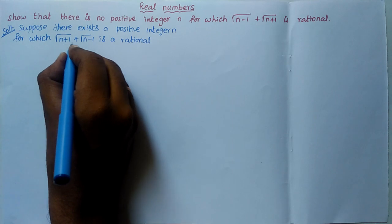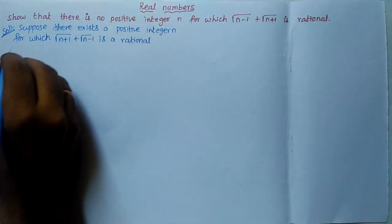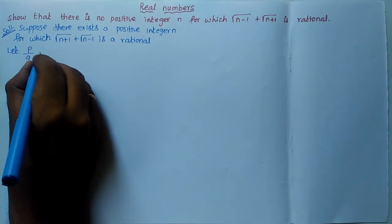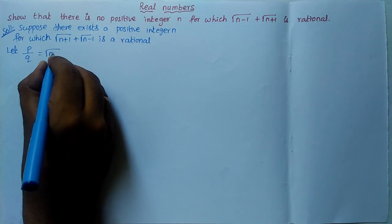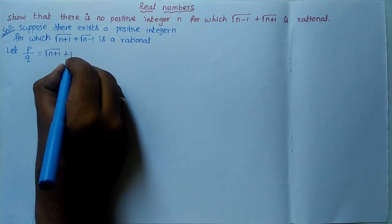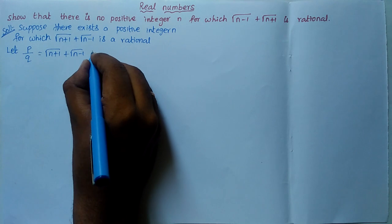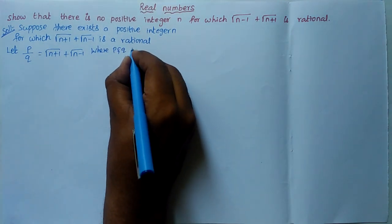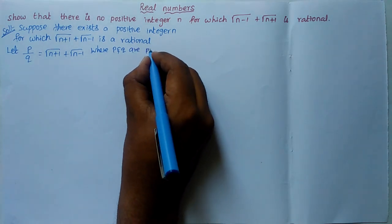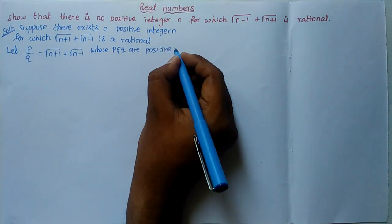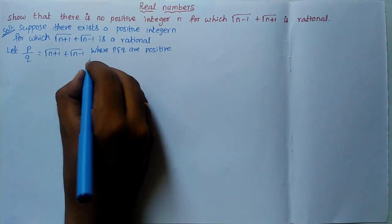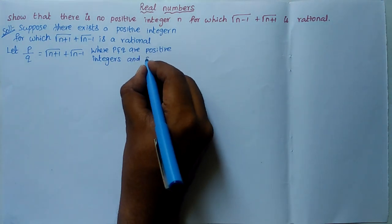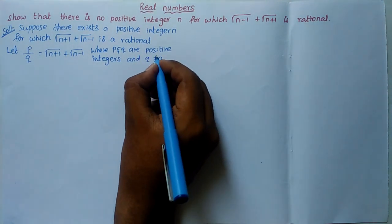Let p/q = √(n+1) + √(n−1), where p and q are positive integers and q ≠ 0. This is Equation 1.